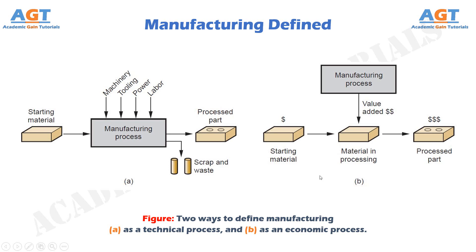When iron ore is converted into steel, value is added. When sand is transformed into glass, value is added. When petroleum is refined into plastic, value is added. And when plastic is molded into the complex geometry of a patio chair, it is made even more valuable.